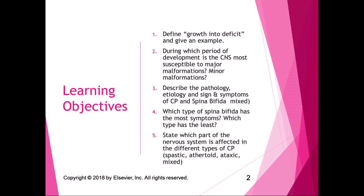We talked briefly in the last section about the development of the nervous system, and now we're going to talk about what goes wrong in the development of the nervous system and what kinds of disorders result. There are interesting things in the book about ADHD and autism spectrum disorders, but the ones I want you to focus on are listed in the learning objectives. The first learning objective is to define the concept of growth into deficit and give an example.